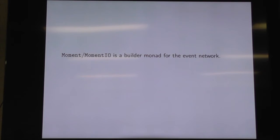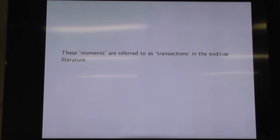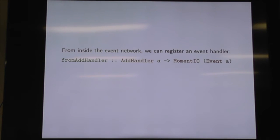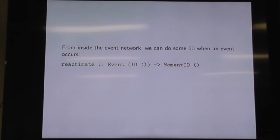How do we know we're dealing with a function that plays with these things? It'll have Moment or MomentIO in the context, depending on whether or not it does IO. It's kind of like a build-them-on-end for the event network, but it also indicates we're doing stuff outside of the current moment in time. In the Sodium literature, they're referred to as transactions, which can help make sense of them. From the inside of the event network, we register the event handler to get events, and the MomentIO builds the network. Then to make things happen, if we have an event of an IO action, we can use reactimate to let that go.